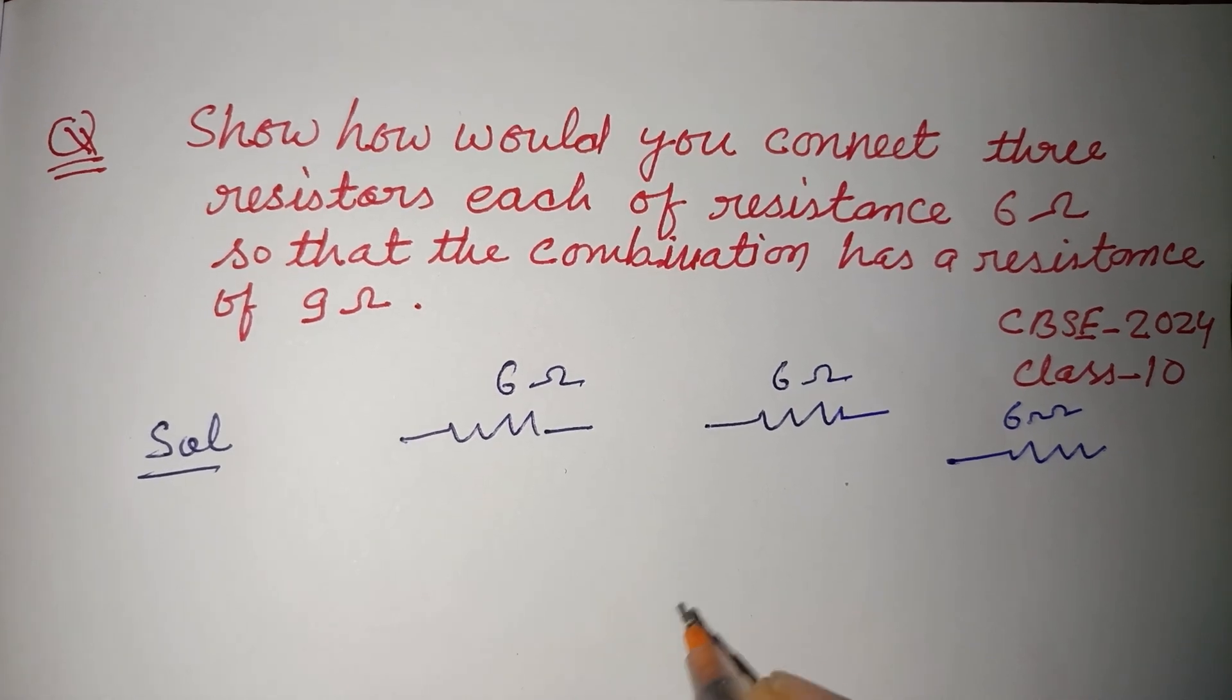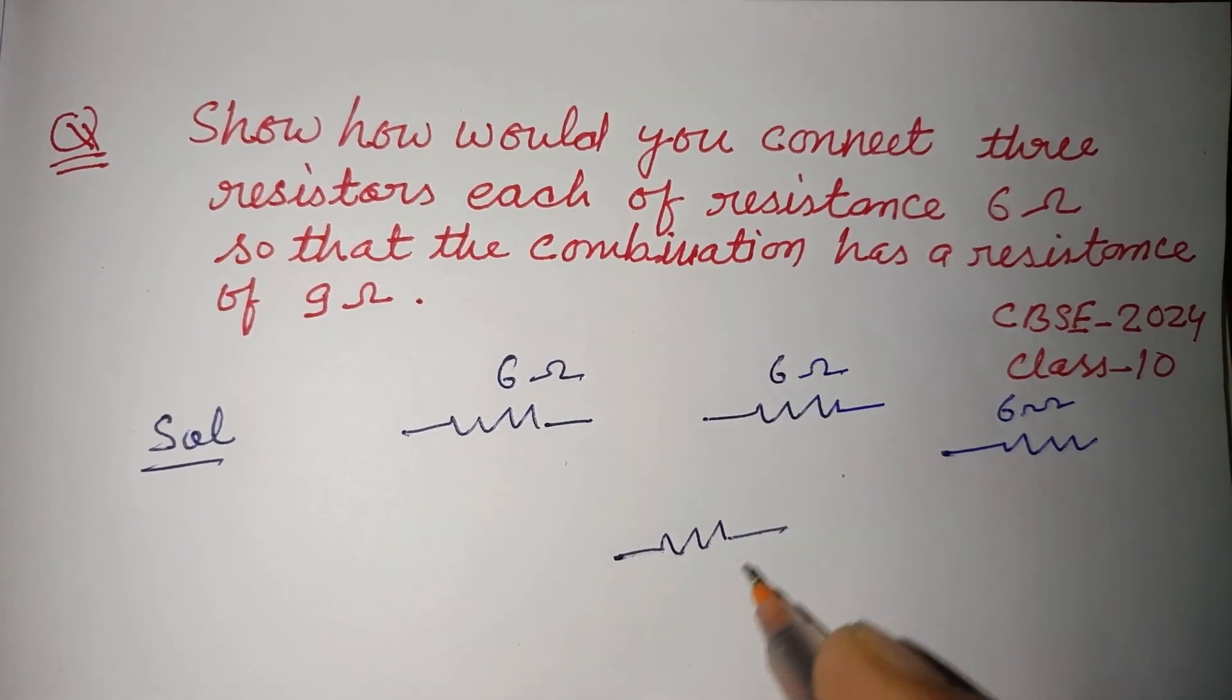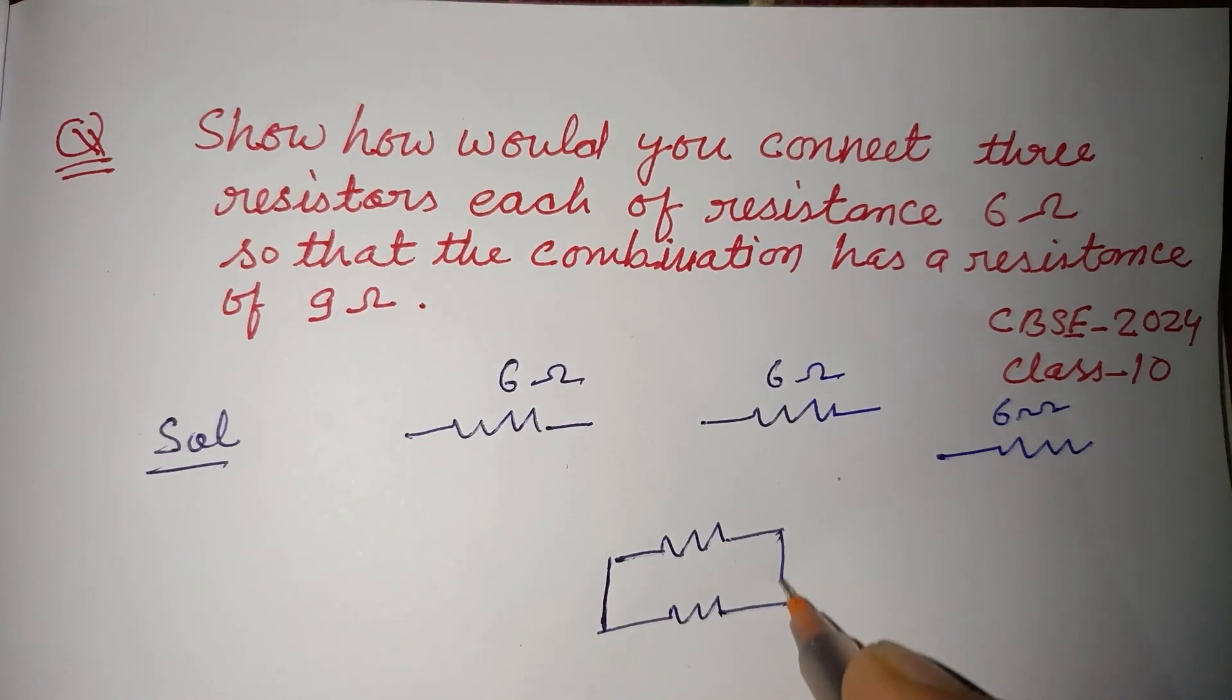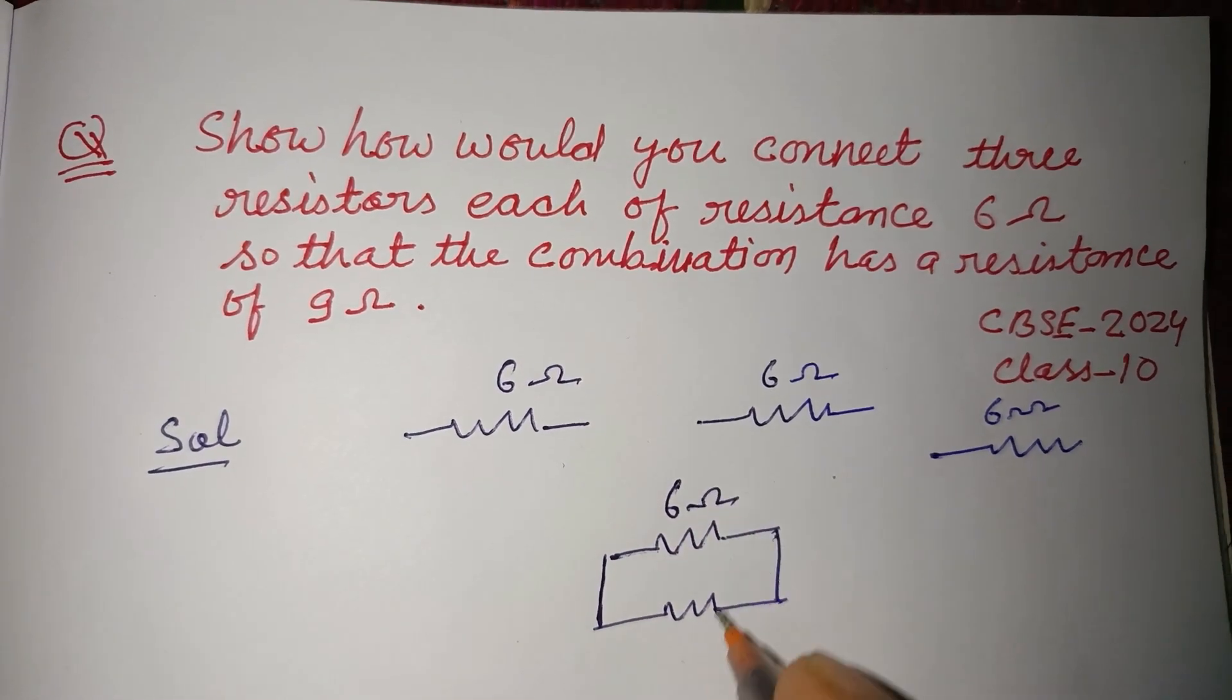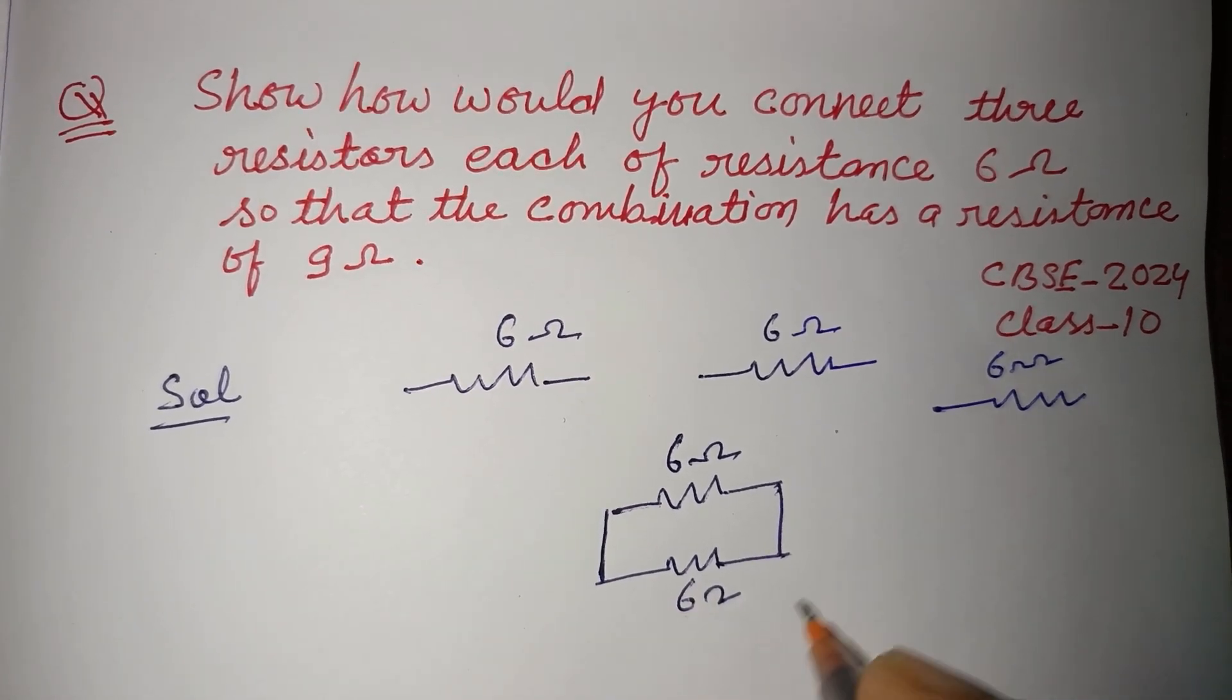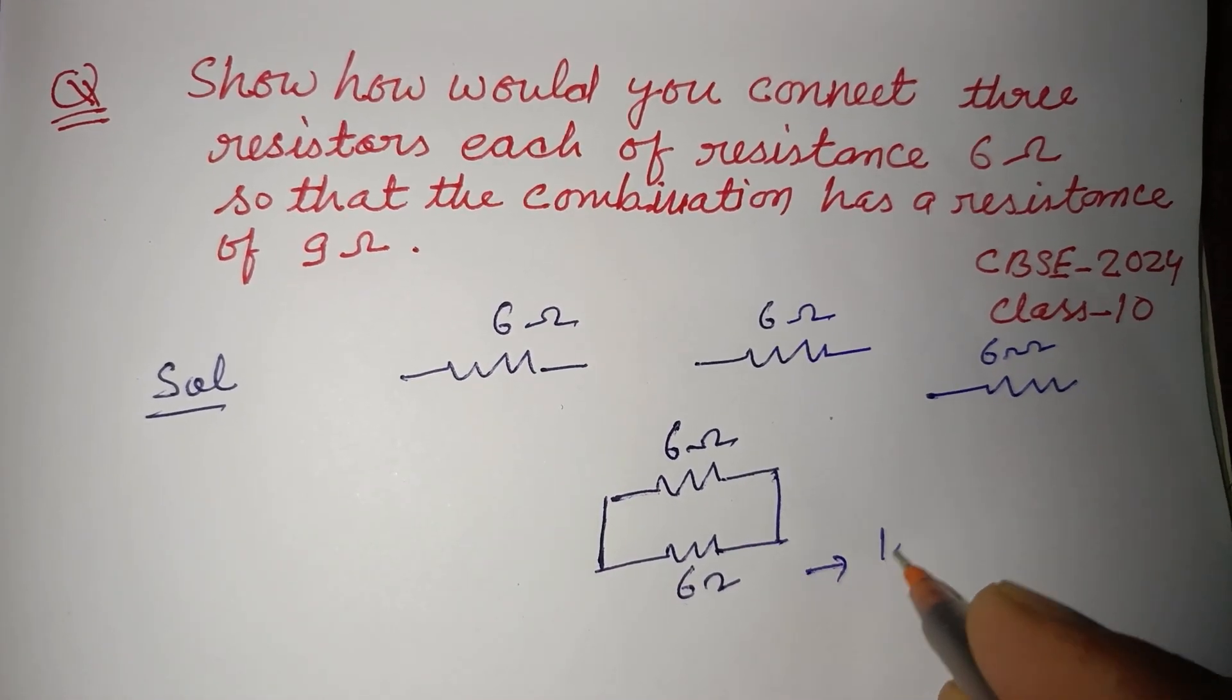So we first connect two resistors in parallel. 6 ohms, 6 ohms. Its resultant is 1 upon r1 equals...